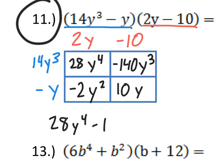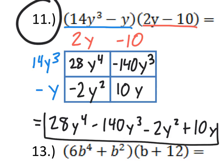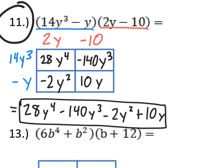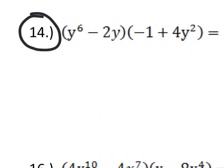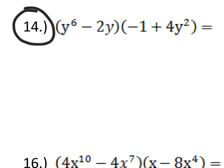And now, once we get these boxes filled out, we just need to add the terms together. So, that's going to be 28y to the 4th minus 140y to the 3rd minus 2y squared plus 10y. So, that is our final answer.